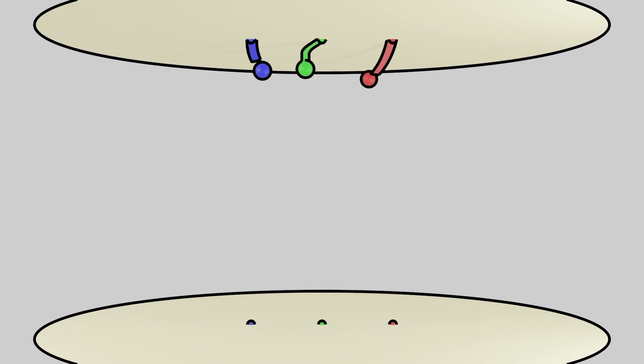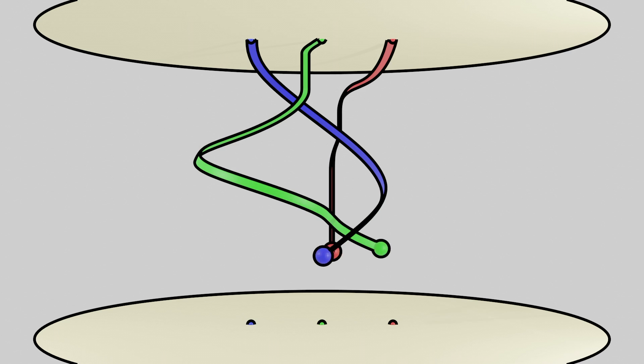When we set everything up like I did here, the only braids you could ever get are ones where each point at the top ends up at the same location at the bottom. This is what they call a pure braid.